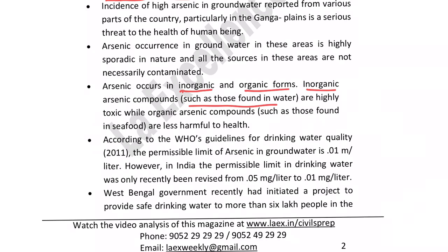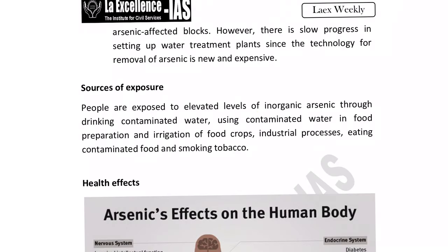India has changed the permissible level of arsenic in drinking water from 0.05 mg per litre to 0.01 mg per litre as per WHO guidelines. The West Bengal government has taken at least six to seven measures to help people affected by arsenic-contaminated water. The actual sources of exposure include drinking contaminated water, using contaminated water in food preparation, irrigation of food crops, industrial processes, eating contaminated food, and smoking tobacco. A question may come asking through which processes humans can be exposed to arsenic.